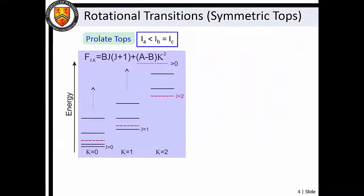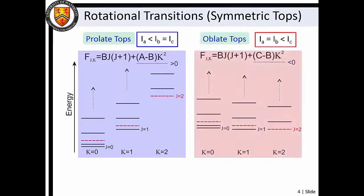If we are interested instead in a symmetric top molecule, we must decide if our molecule is prolate or oblate. While the prolate and oblate rotational energy level expressions look similar, it is important to note that in the prolate case, energy for a particular value of J increases with K, whereas it decreases with increasing K in the oblate case.